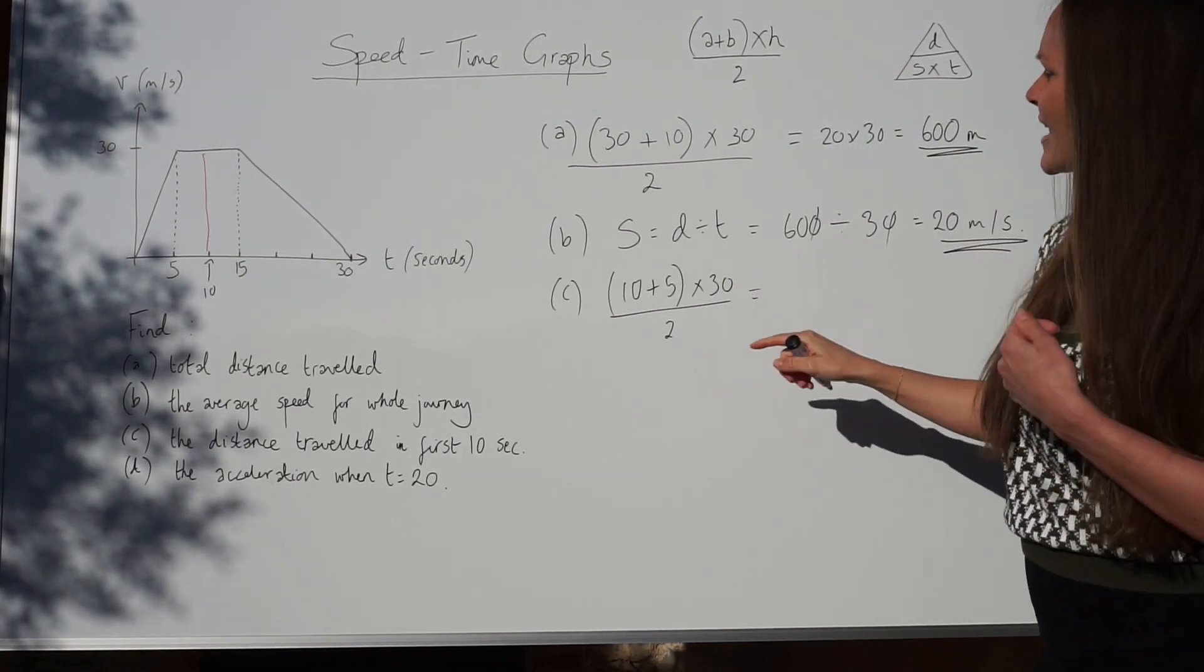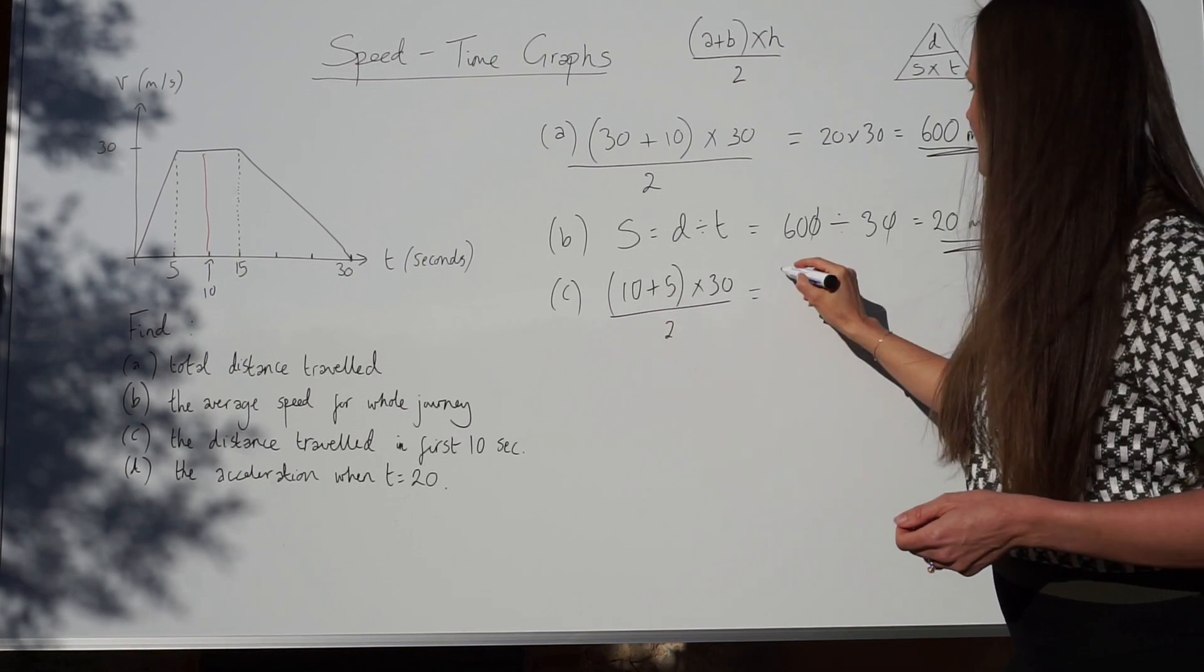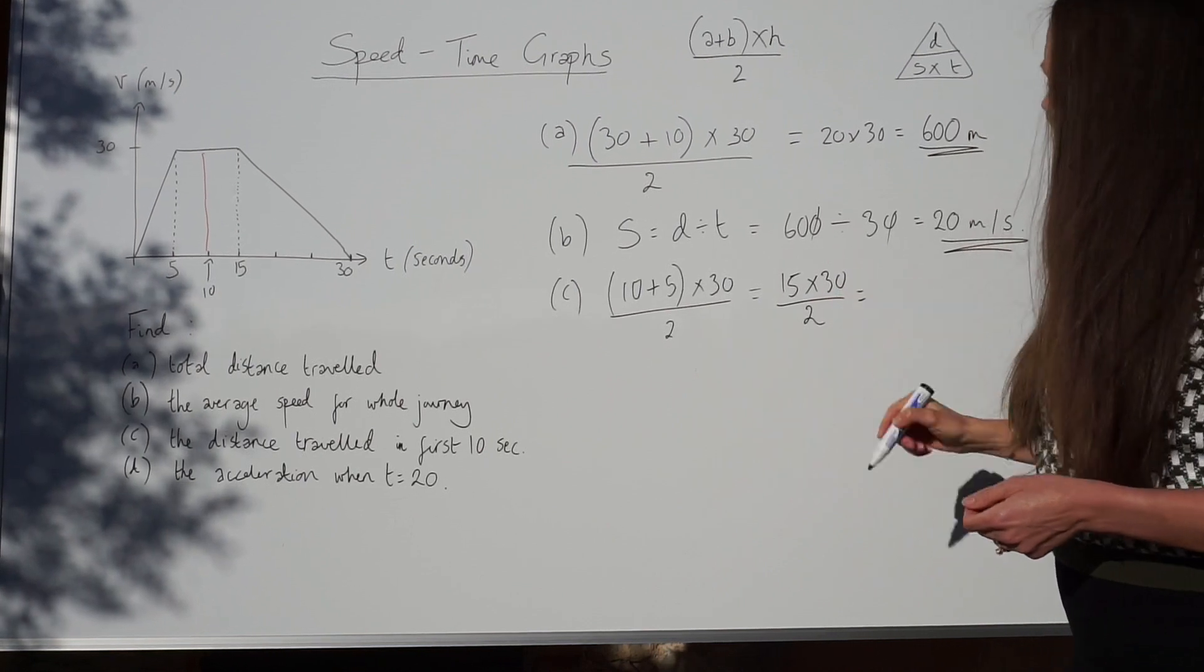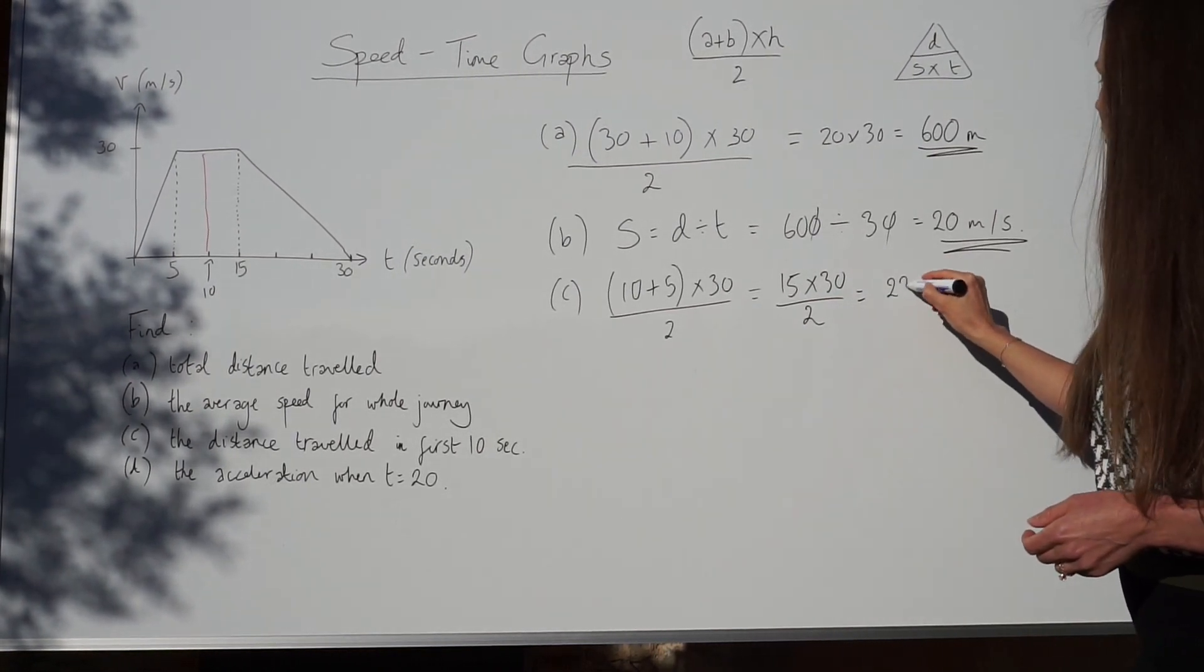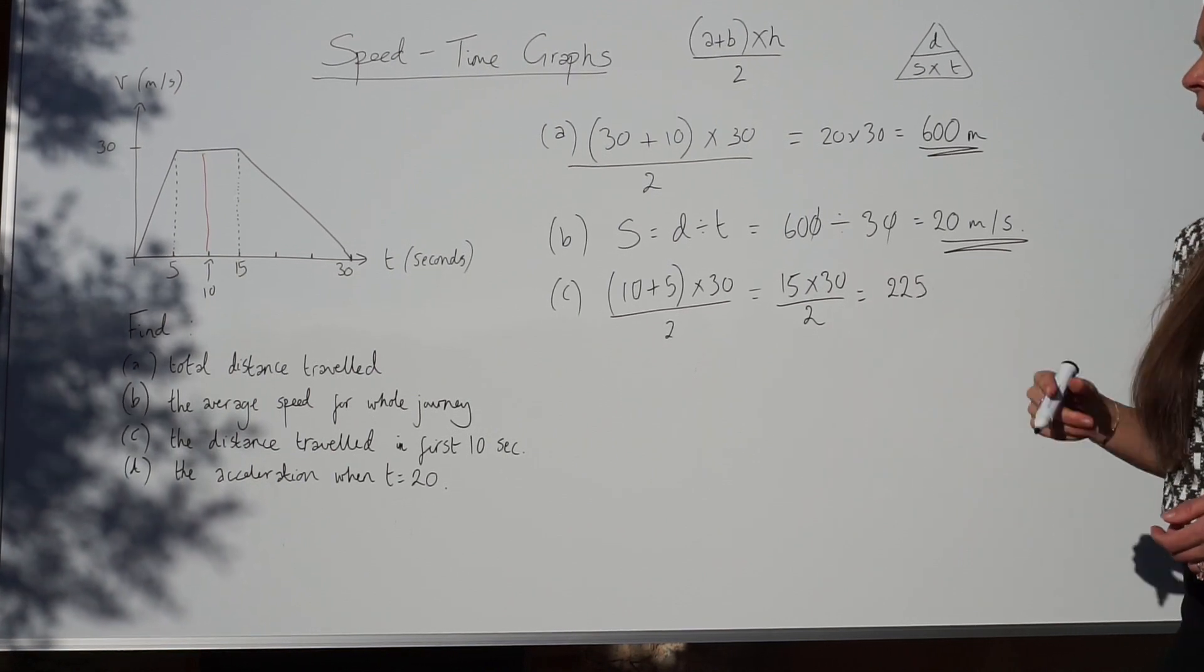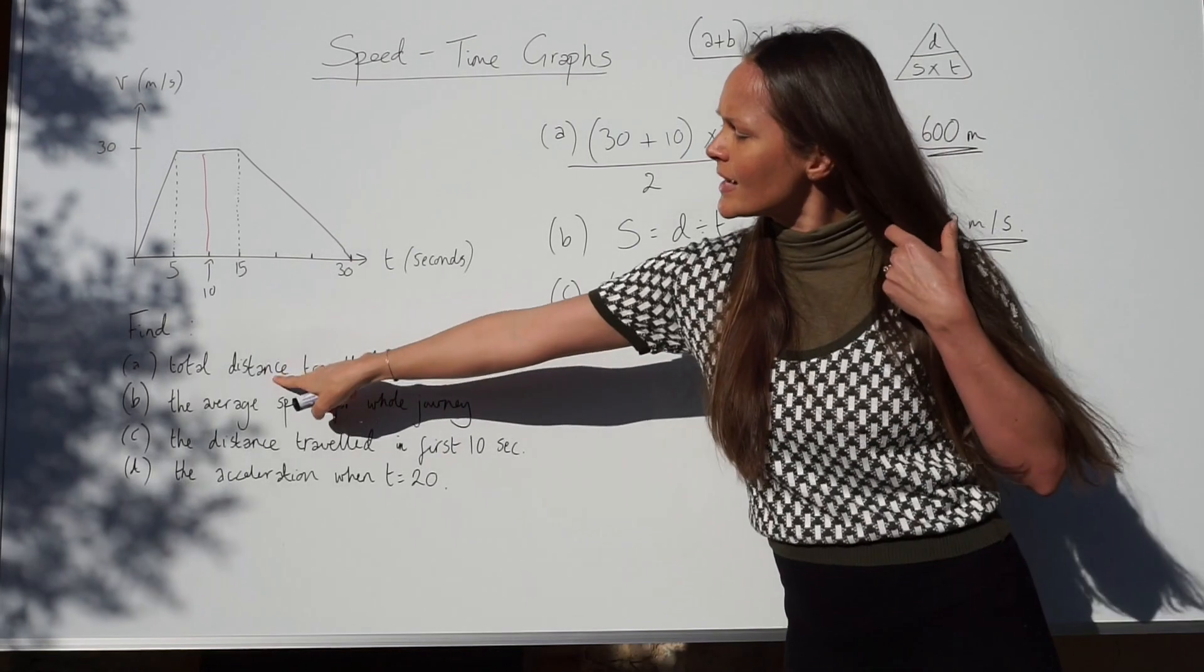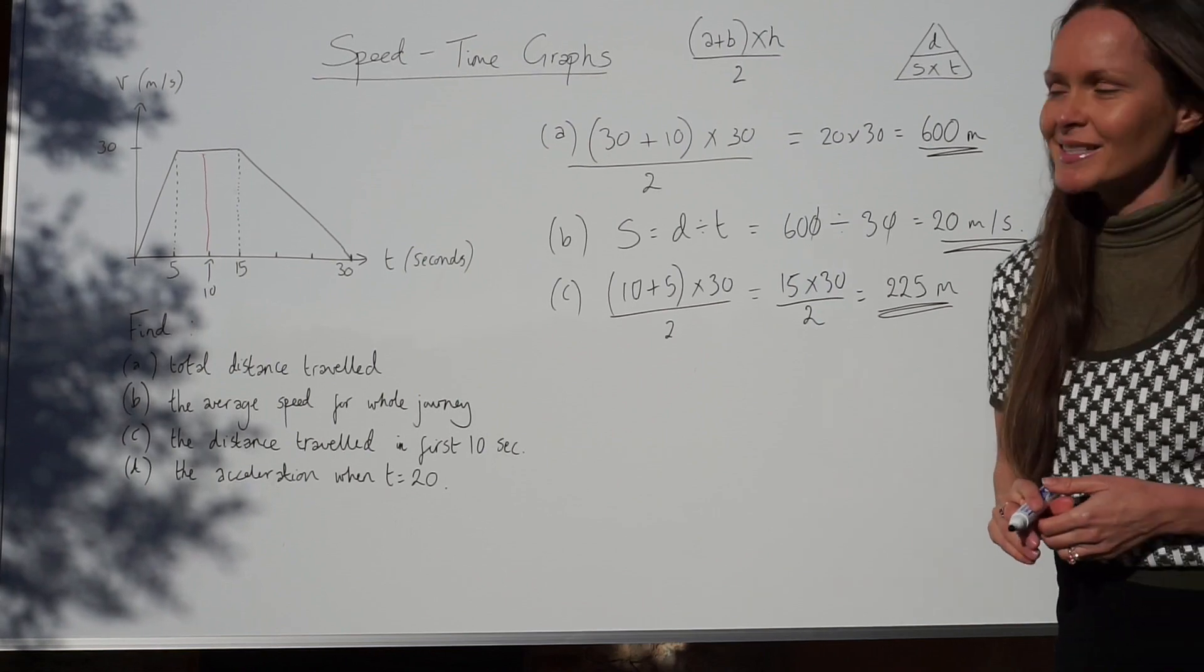So, this time, if I work this out, 10 plus 5 is 15. If you work that out either in your head or in the calculator, you should get 225. And, again, it's distance. So, just like before, the distance, the units here were metres. Same thing for this one. So, it's 225 metres.